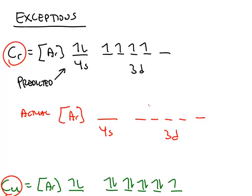The actual electron configuration has only one electron in the 4S, and the 3D has five electrons.